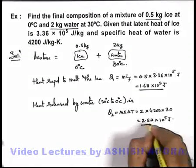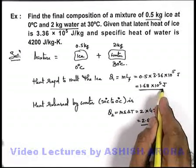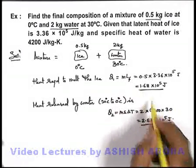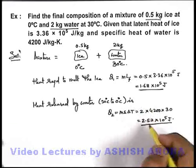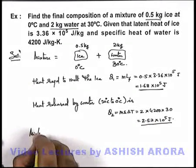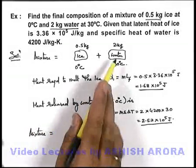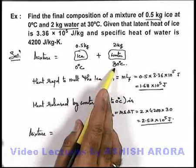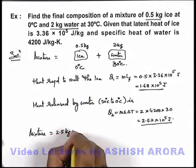We can see that this amount of heat released by water is more than that required by ice to melt. That means the whole ice will melt completely and still some amount of heat will be left over. So we can write down the final mixture as when ice completely melts and water drops its temperature from 30 to 0. In all we'll be having 2.5 kg water.